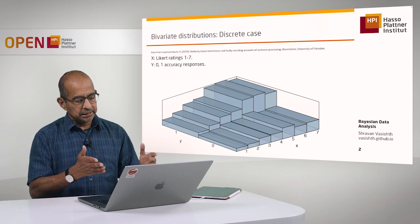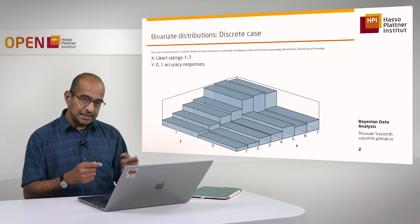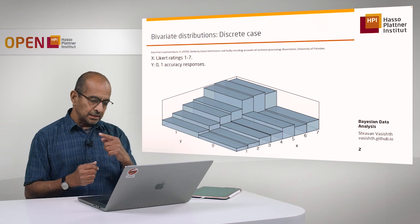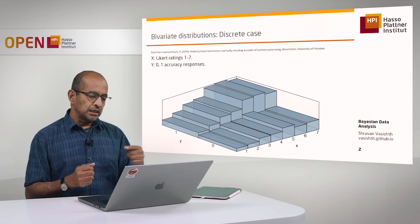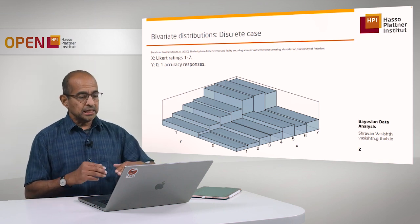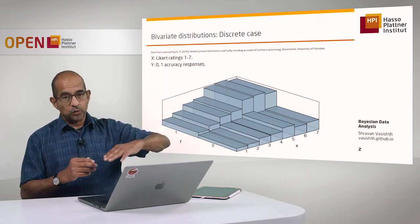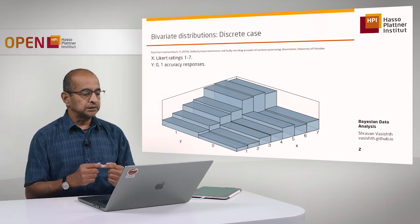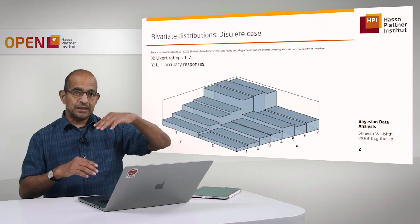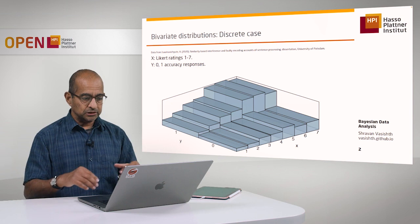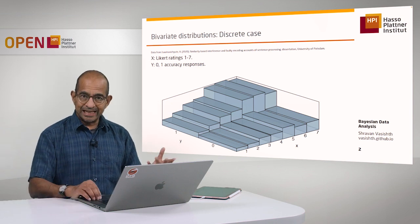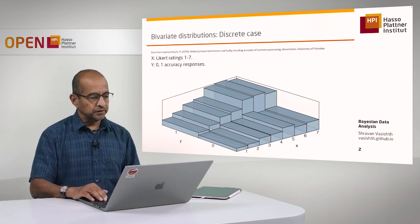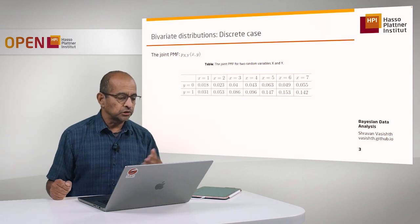On one axis you see the 0/1 responses, on the other axis you see the Likert responses, and on the Y axis — the axis going upwards — that's representing the joint probability. What does this look like numerically? If you look at it as a table, we would see something like this.